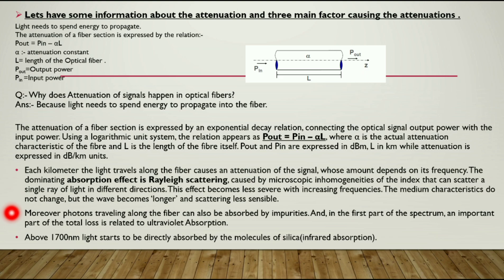Moreover, photons traveling along the fiber can also be absorbed by impurities, and in the first part of the spectrum an important part of the total loss is related to ultraviolet absorption.